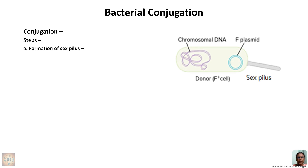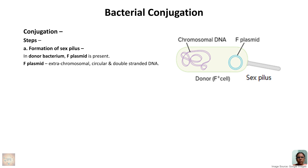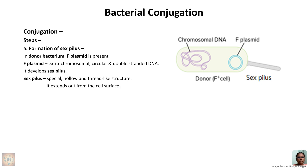The first step is formation of the sex pilus. In the donor bacterium, apart from chromosomal DNA, there is an extra chromosomal, circular, double-stranded DNA called the F plasmid — the fertile plasmid. It develops a hollow thread-like structure called the sex pilus, which extends out from the cell surface. Sex pilus formation is controlled by a gene located in the plasmid, which gives genetic instructions to form the sex pilus.